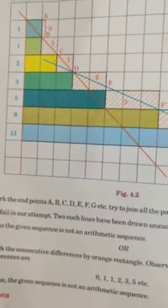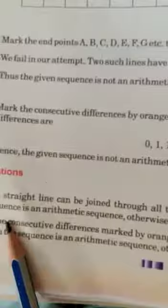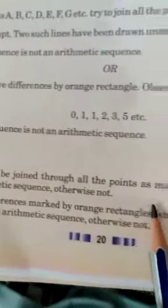So, the observation part will be: if a straight line can be joined through all points as marked in the first figure, then the sequence is an arithmetic sequence or arithmetic progression, or otherwise not.